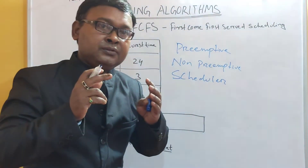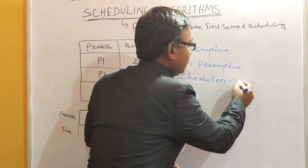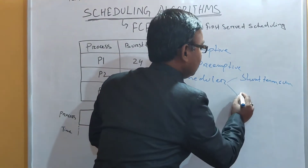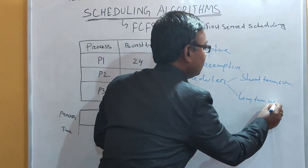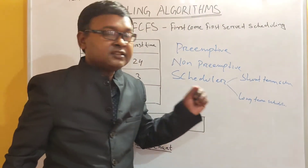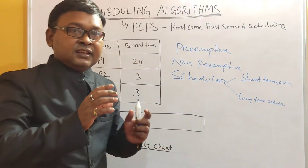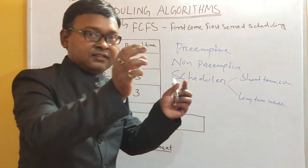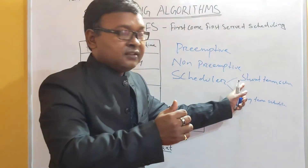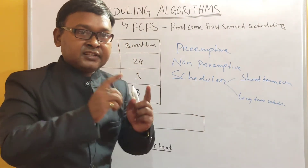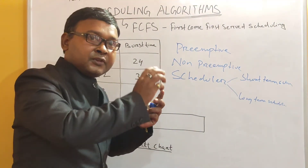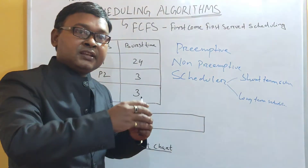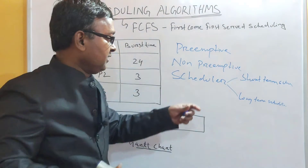Scheduler can be of two types: one is short term scheduler and another one is long term scheduler. The short term scheduler is responsible for scheduling your jobs or processes from your primary memory to the processor. That is the short term scheduler — it is responsible for making processes be scheduled from primary memory to the processor.